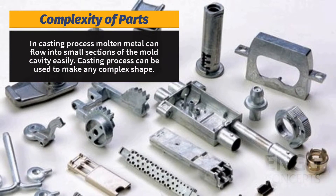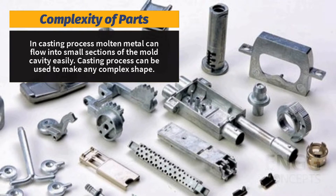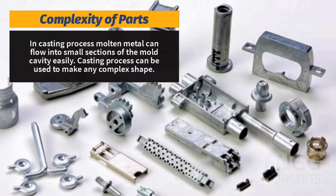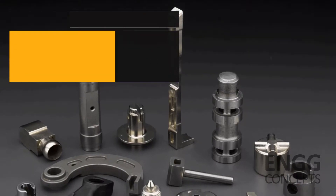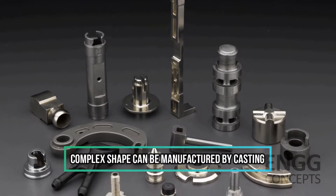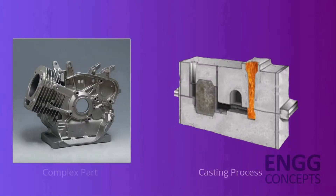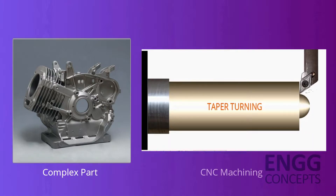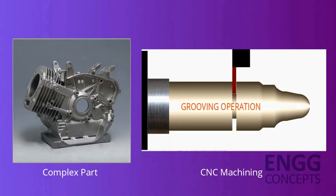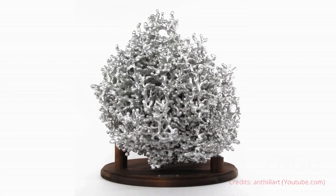Now let's discuss the complexity of casting parts. In the casting process, molten metal can flow into small sections of the mold cavity easily. Hence casting can be used to make any complex shape. Suppose we want to manufacture a complex part — with casting it is possible, but to produce the same part with other processes like CNC machining it is too complex and uneconomical. This image is a good example of how aluminium reaches complex small sections.